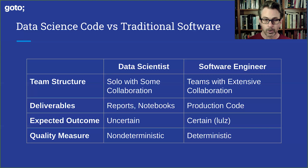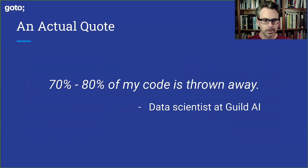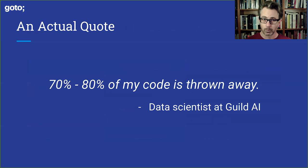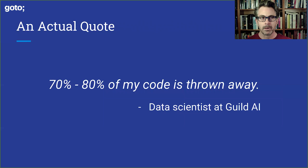This is an actual quote from a Guild AI data scientist: '70% to 80% of my code is thrown away.' When I heard that, it completely changed my point of view about the problem of integrating data scientists and engineering. This highlights how fundamentally different the work is, and no tooling or process can simply address this. It's a tricky problem, and it works its way into code and into the effective processes that generate that code.